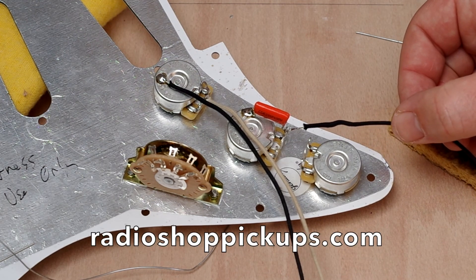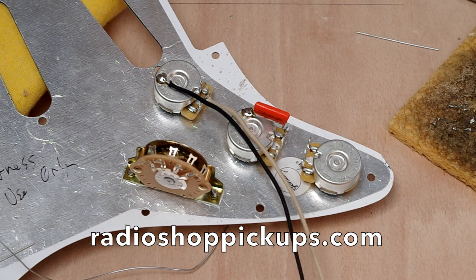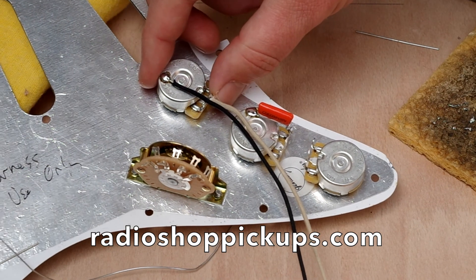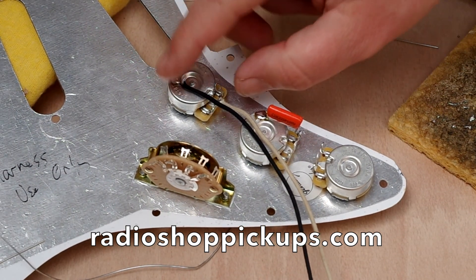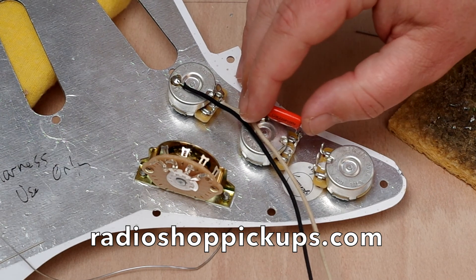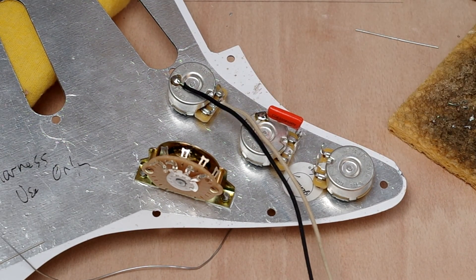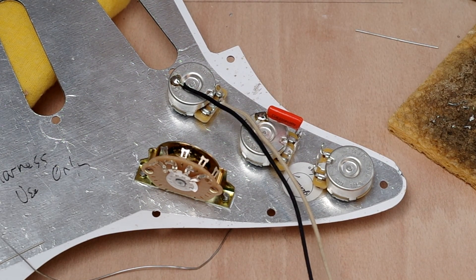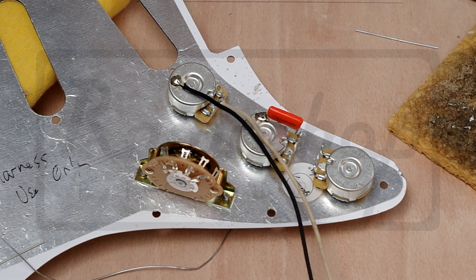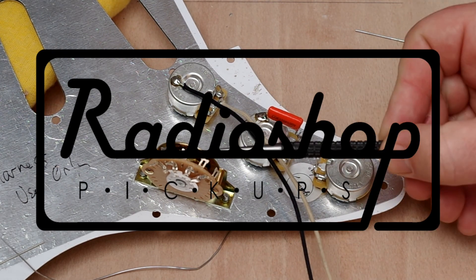So that was how to solder to the top of a pot and also solder a capacitor to the top of a pot. So thanks for watching this part two. In part three, I'm going to be looking at the switch. So thanks for watching. See you then.